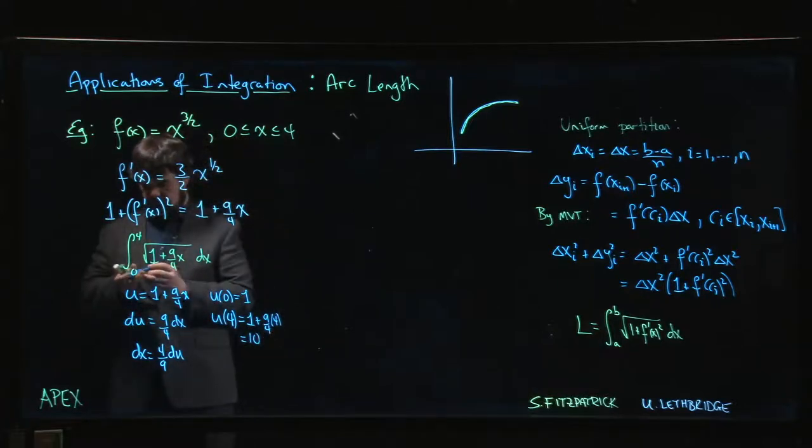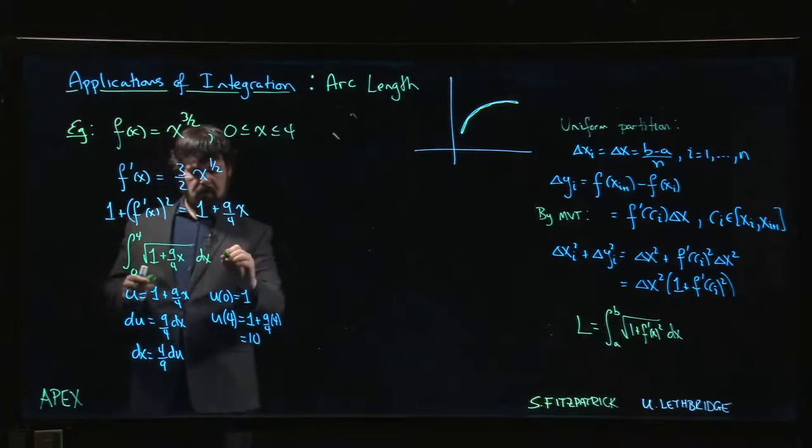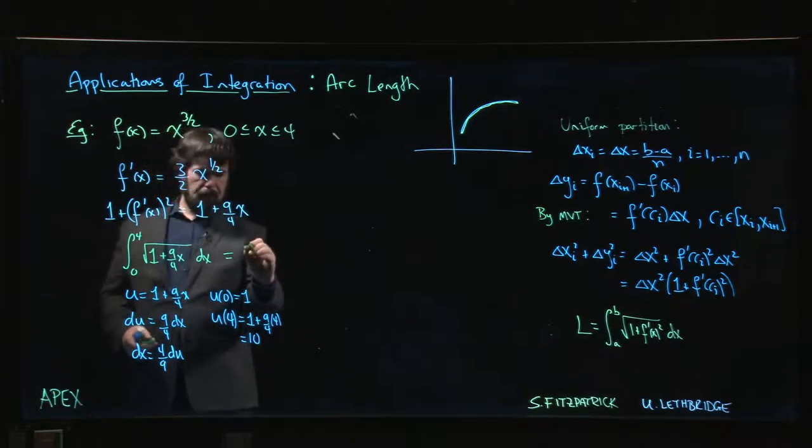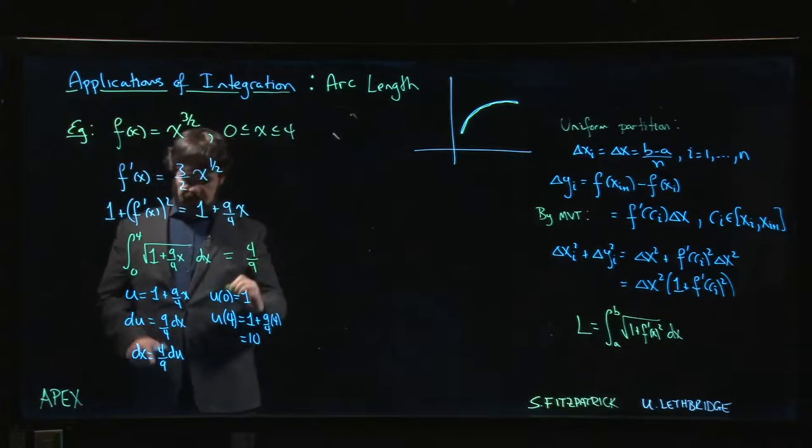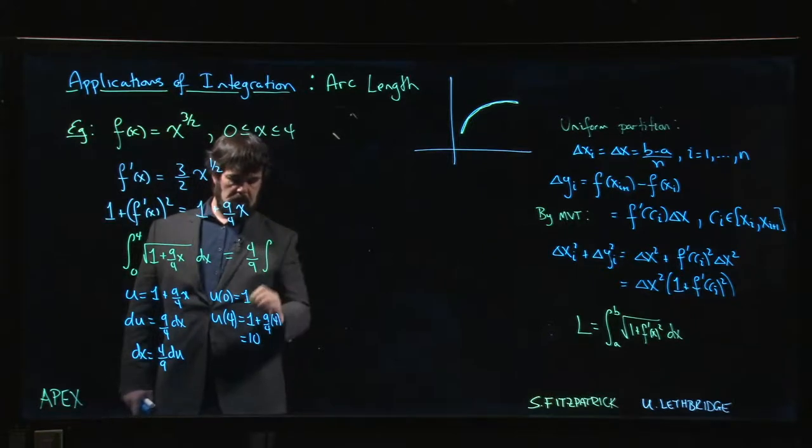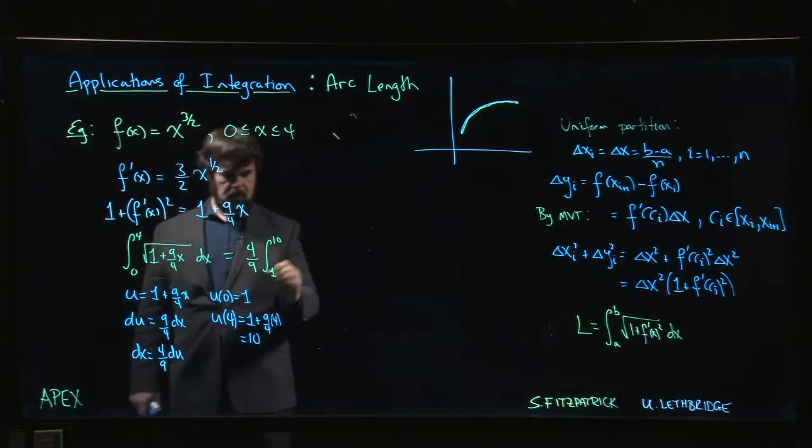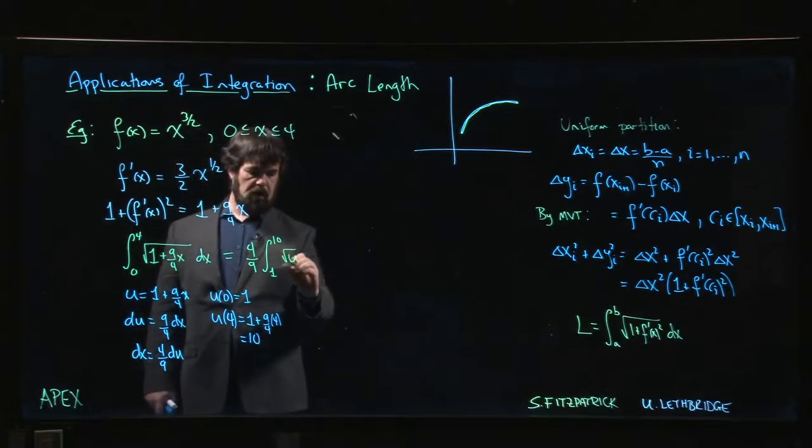which gives us 10. How convenient! Okay, so if we put everything in, put that 4 over 9 out front just so you don't have to worry about it. Integral from 1 to 10, square root of u times du.